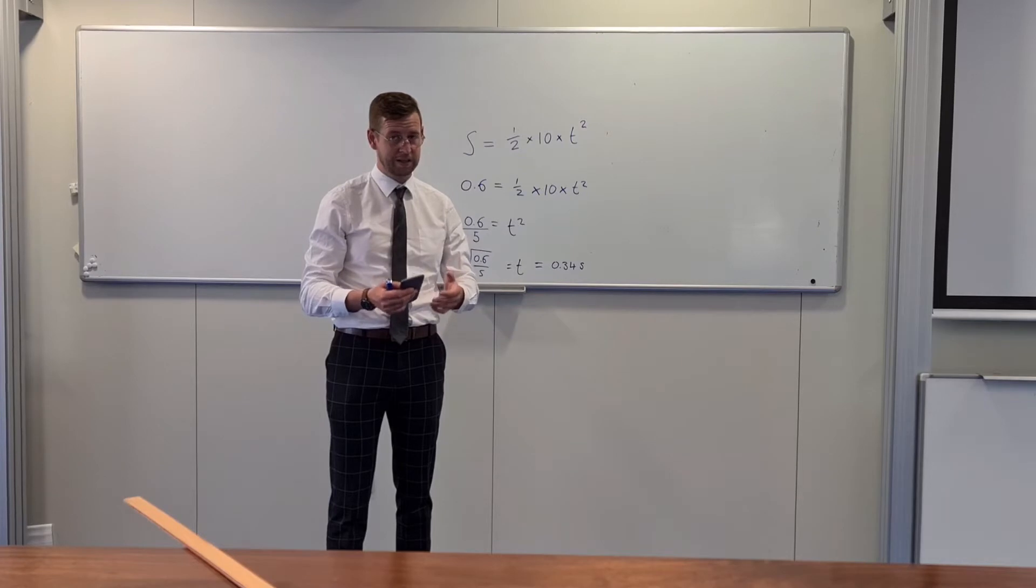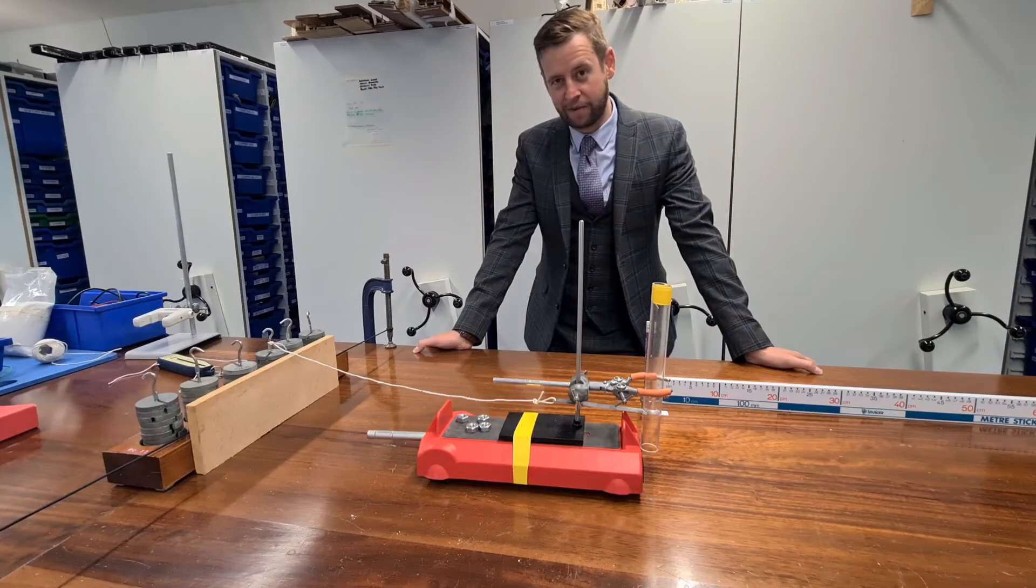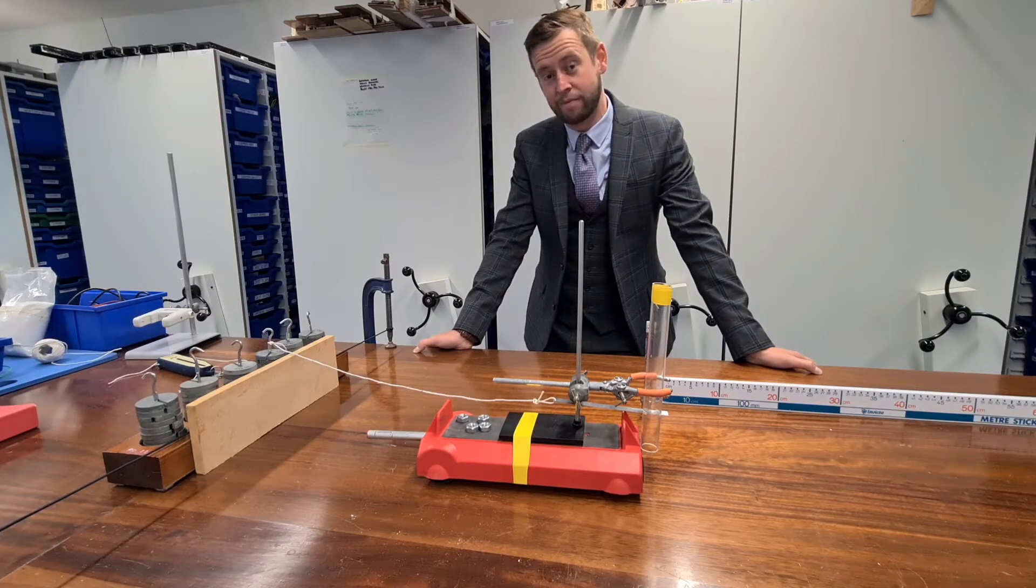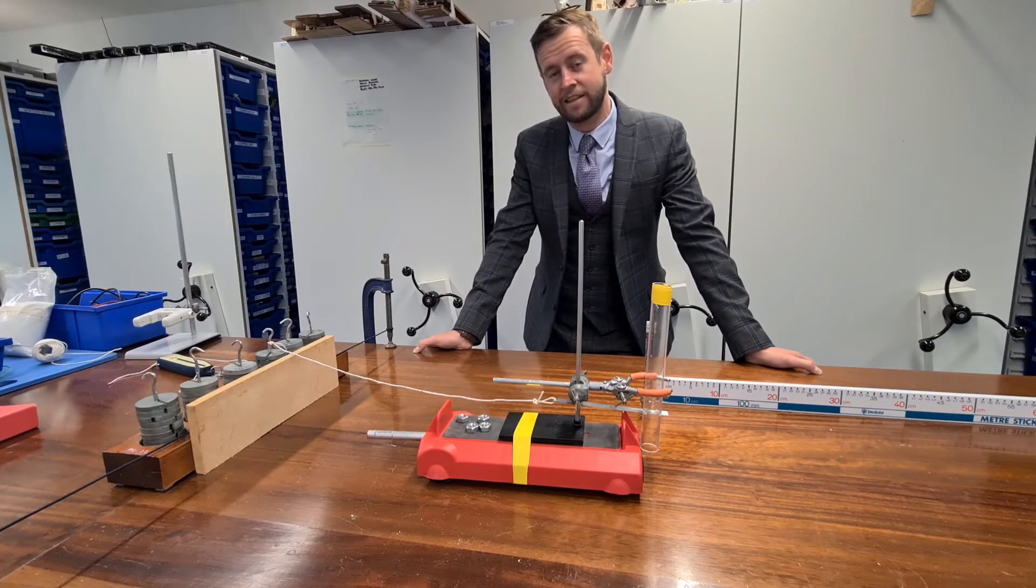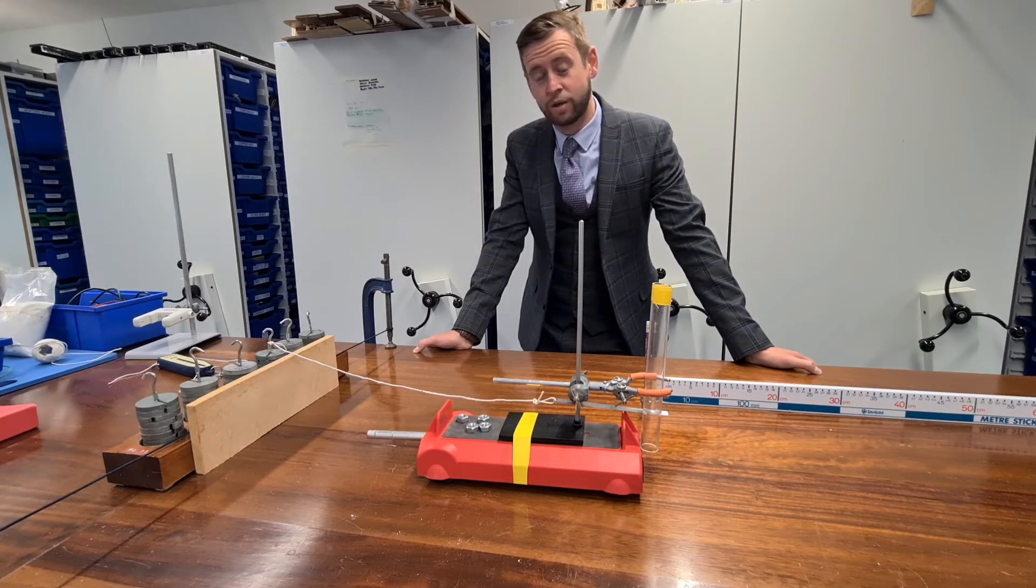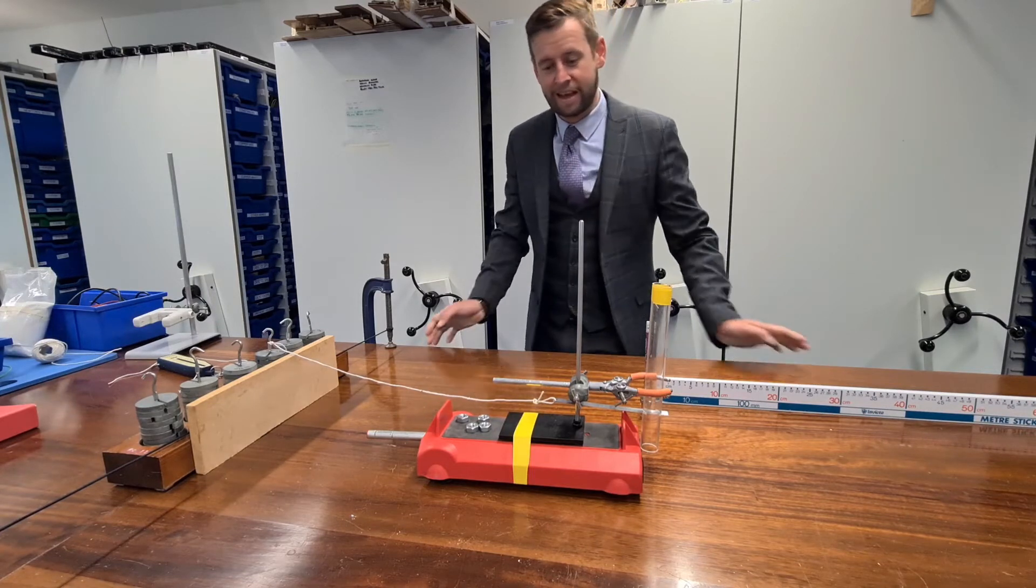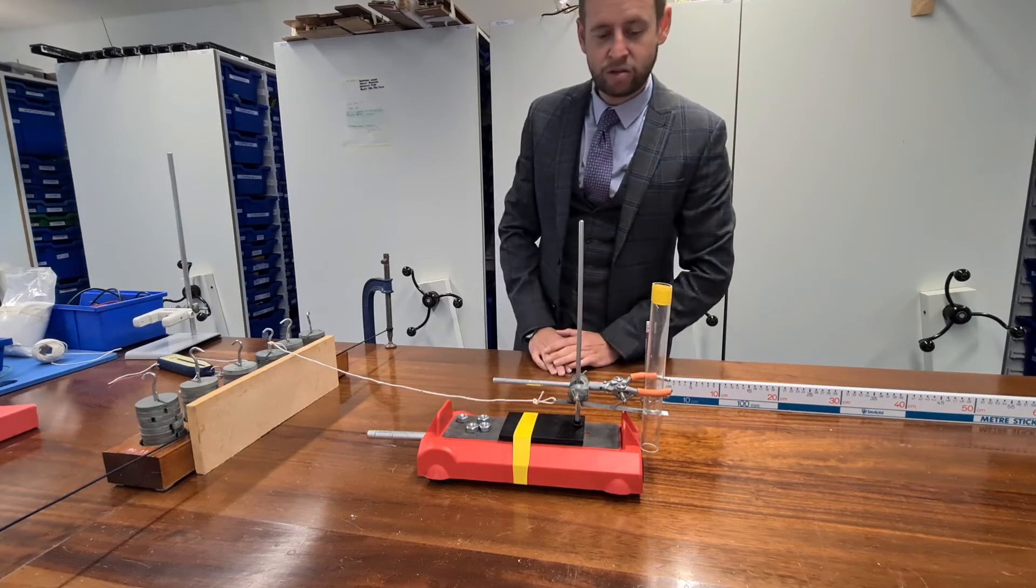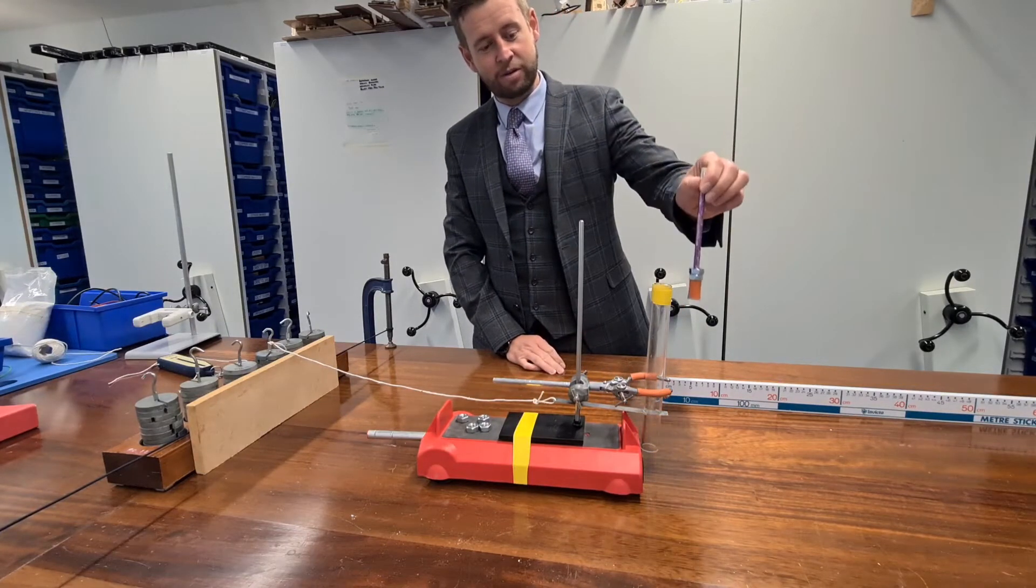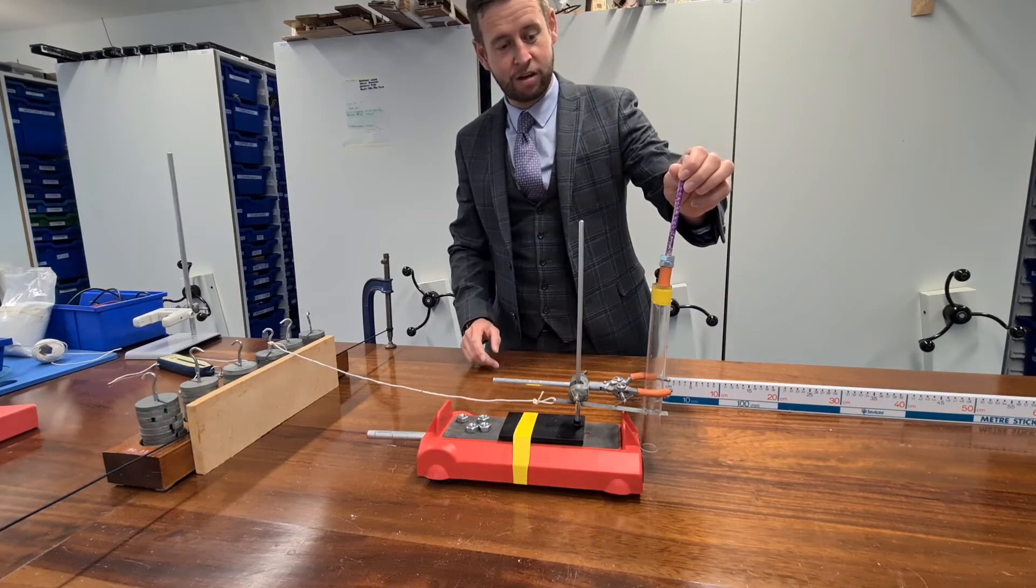And we need to look at the things that affect that as well. This apparatus here enables us to investigate the braking distance. The distance that the car travels from the application of the brake to the point where the car stops. What it is, it's a dynamic trolley and it has this brake which drops down and rubs on the table. That's what brings this car to a stop.